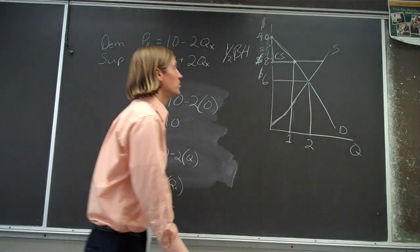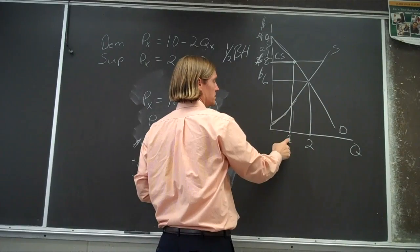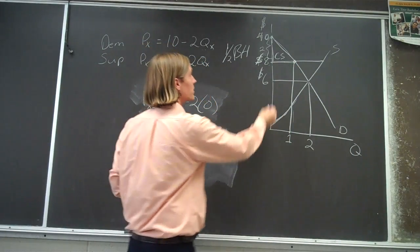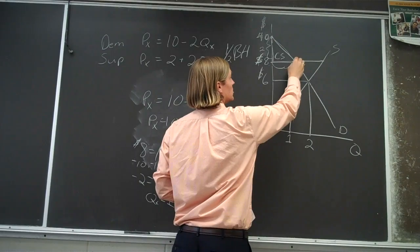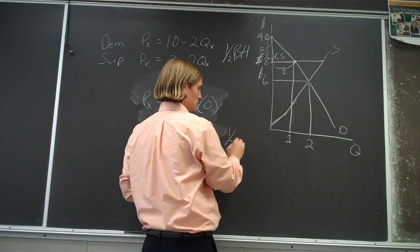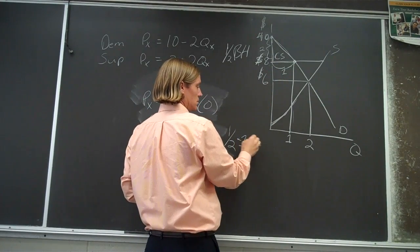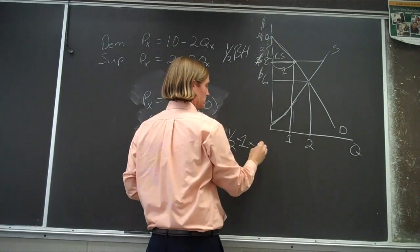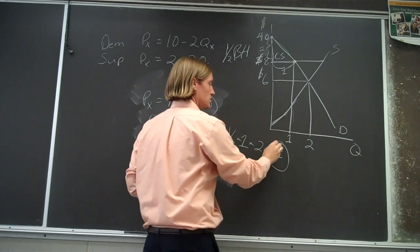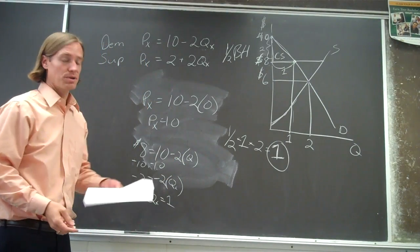And so we're at this point here is the price of 8, a quantity of 1. And so now we can figure out the area of this triangle. Because this is 1, so we've got 1 half times the base, which is 1, times the height, which is $2. And so that area, the consumer surplus is equal to 1.